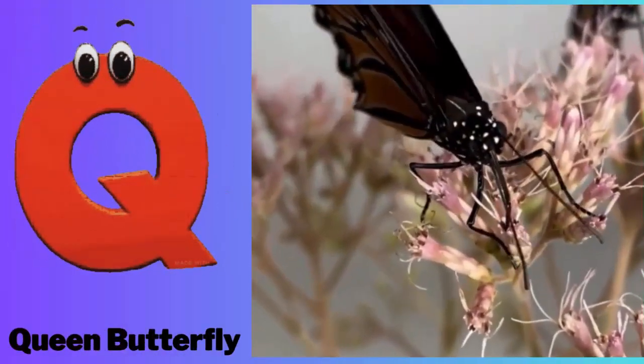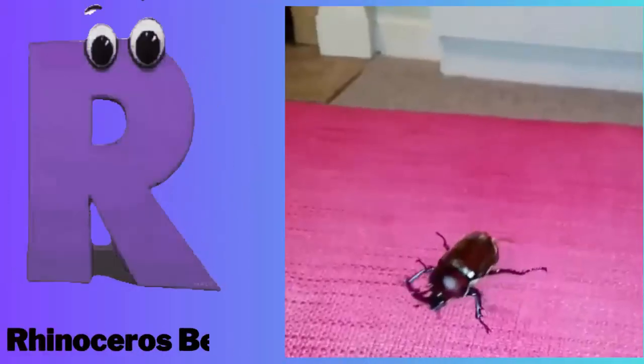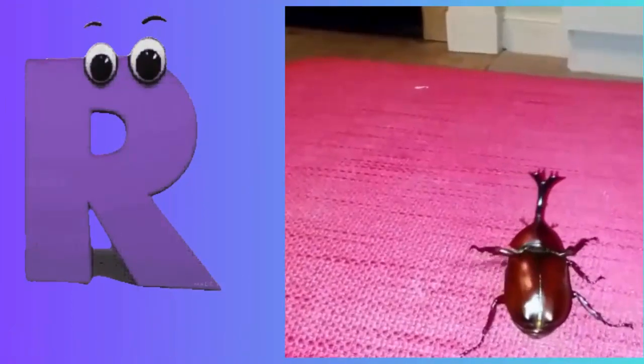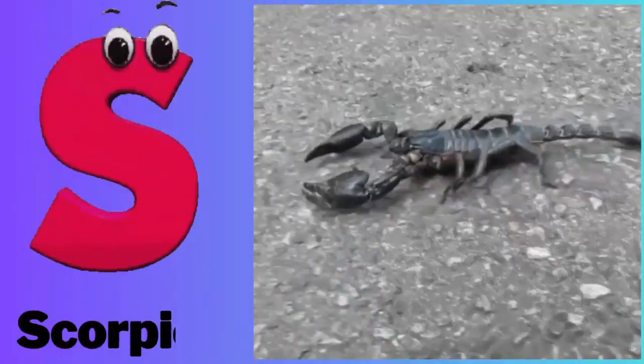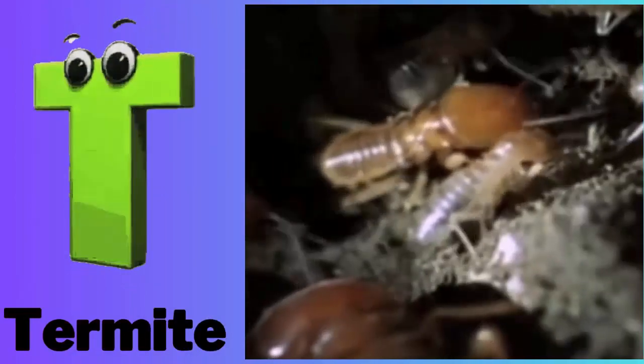Q - Q for queen butterfly. R - R for rhinoceros beetle. S - S for scorpion. T - T for termite.